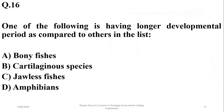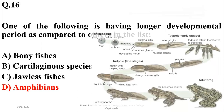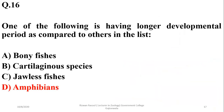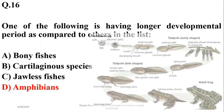Number sixteen: one of the following is having longer developmental periods as compared to others in the list. Amphibians are comparatively having longer developmental periods because they are relatively well-developed, higher organisms as compared to fishes and other organisms in the list, so we are going to prefer option delta.